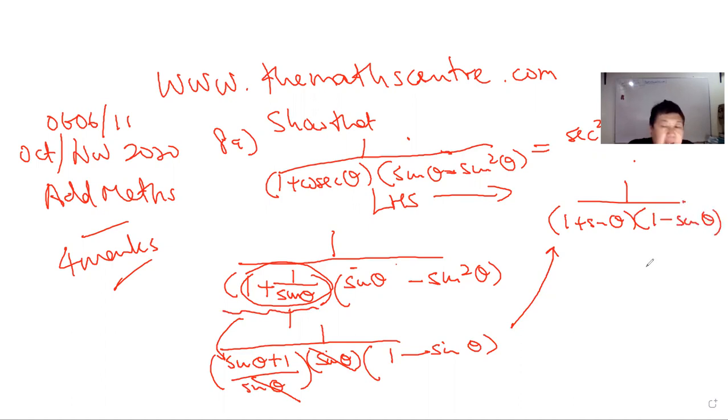When I expand the bottom here, 1 plus sin theta times 1 minus sin theta, I have 1 minus sin squared theta. It's A plus B, A minus B, so it becomes A squared minus B squared.